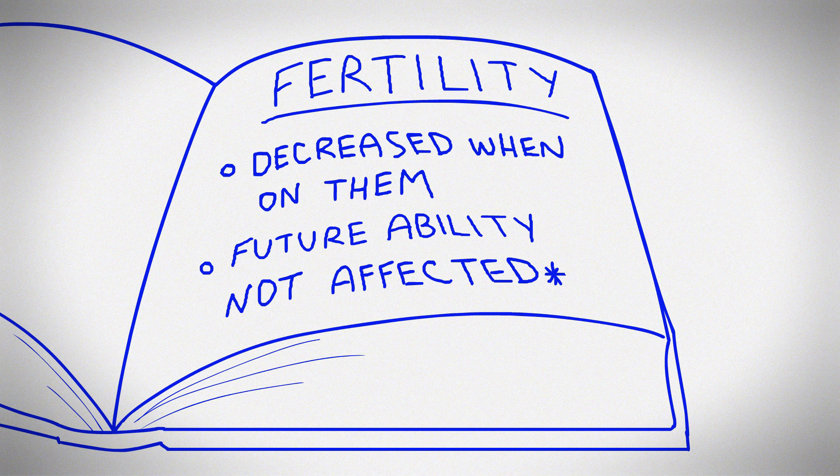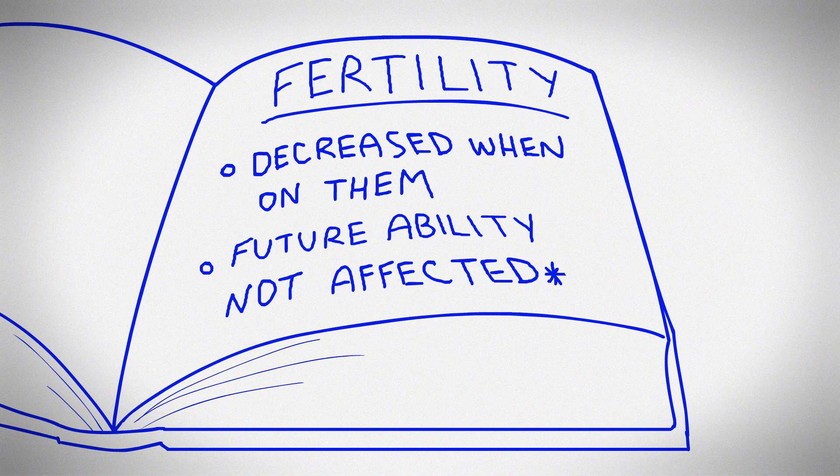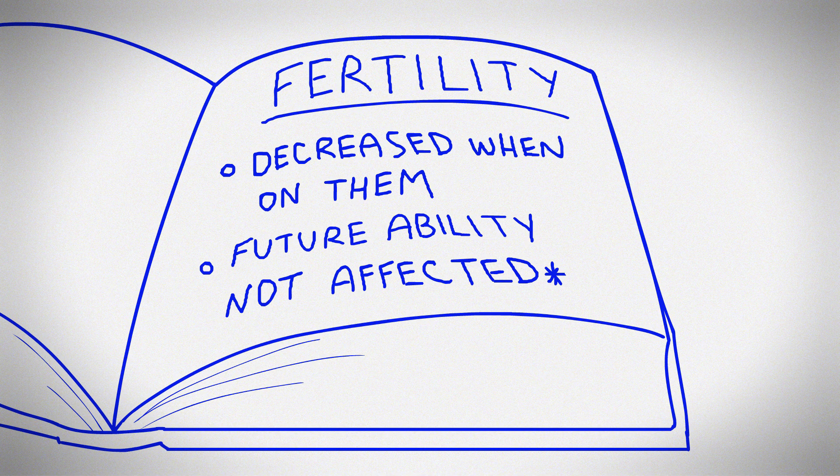Fertility. Taking puberty blockers alone should not affect your ability to have a baby in the future. Puberty blockers decrease fertility when you're on them, but should not affect fertility in the future if you stop them. If cross-hormones are started with puberty blockers, fertility risks may be different.